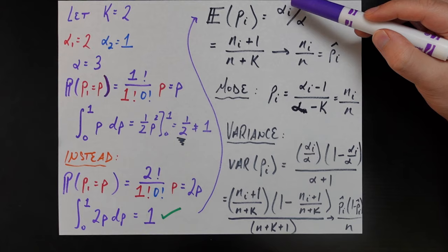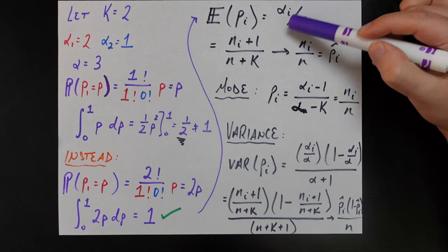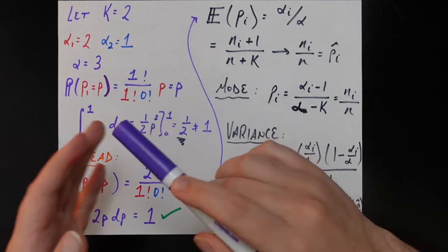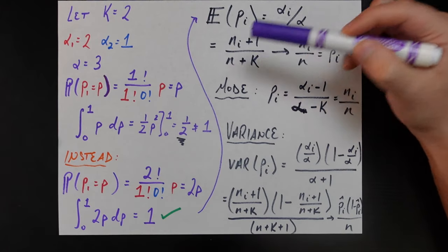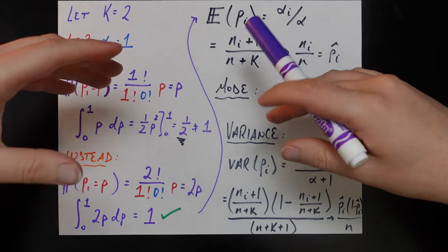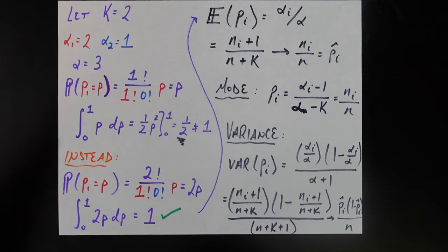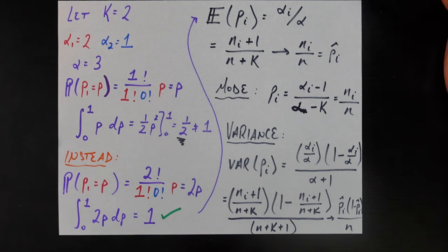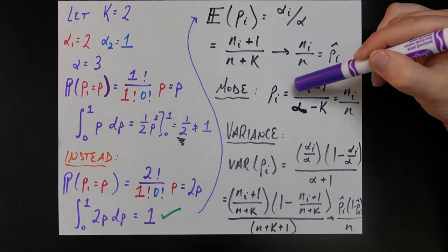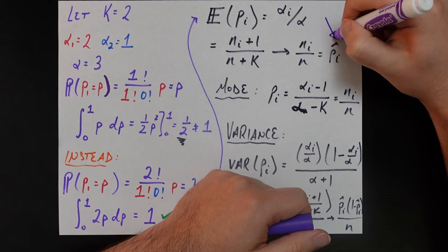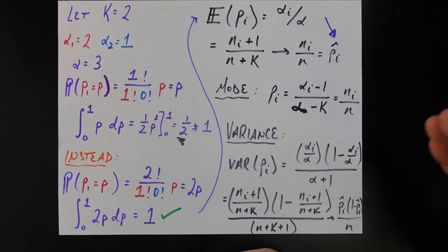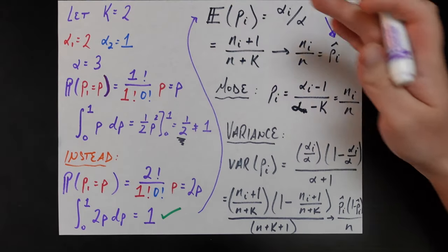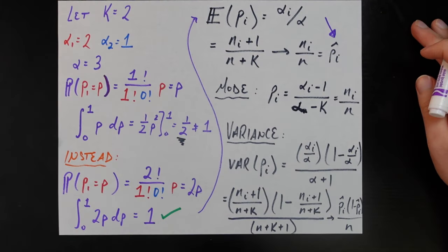Alpha_i equals the total number of people studying math, for example, plus one, and alpha is the sum of all the alphas — the total number of people in our sample plus k. As n goes to infinity and we get bigger and bigger samples, the plus one and the plus k become negligible, so the expected value converges to n_i over n — simply the empirical fraction of people studying math. The expected value of the probability in the Dirichlet distribution approaches the empirical probability as our sample size grows.